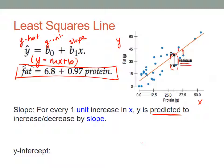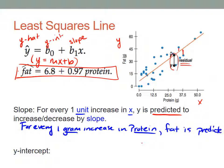For this specific problem we know our slope is 0.97, so what we would say is that for every one gram increase in protein, so I'm just filling in the blank here - protein is my x, gram is my unit - y is fat, fat is predicted to, in this case, increase by 0.97 grams.